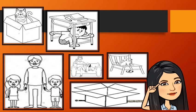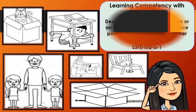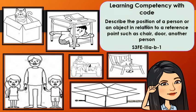Learning competency with code: Describe the position of a person or an object in relation to a reference point such as a chair, door, or another person.